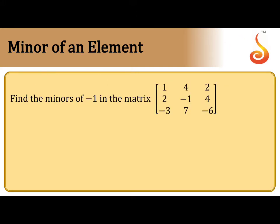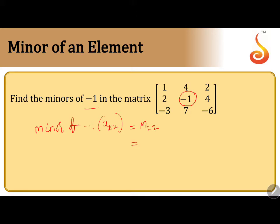Let us take one example problem: find the minor of minus 1 in the matrix. Where is minus 1 located? It is present in the second row, second column — A22. This is denoted by capital M22. It is the determinant of the submatrix obtained by deleting the second row and second column. The remaining elements are: 1, 2, minus 3, minus 6.